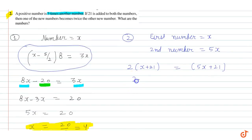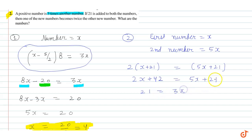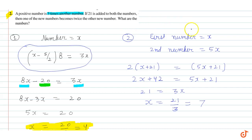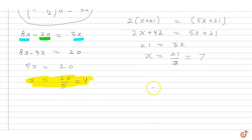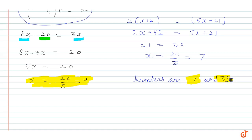Simplifying: 2x plus 42 equals 5x plus 21. Moving x terms to one side: 5x minus 2x is 3x, and 42 minus 21 gives 21. So 3x equals 21, meaning x equals 7. The two numbers are x and 5x, so the numbers are 7 and 35. This is the answer for this question.